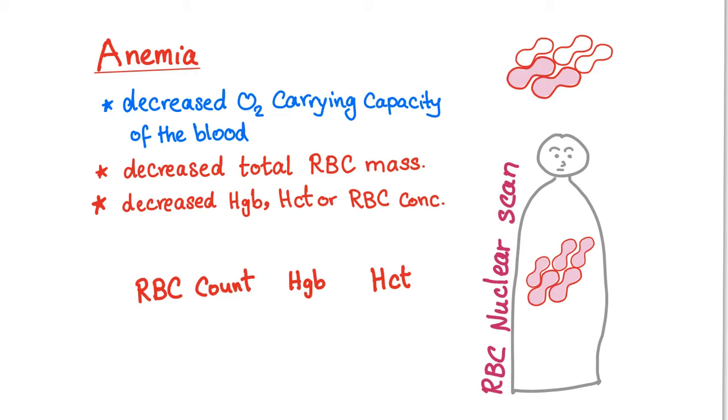First, what's the definition of anemia? Whenever you're studying anything, the first thing to know is what's the definition. There are many definitions of anemia like it's the decreased oxygen carrying capacity of the blood. What does this mean? The ability, the capacity of the blood to carry oxygen is less, or decreased total RBC mass.